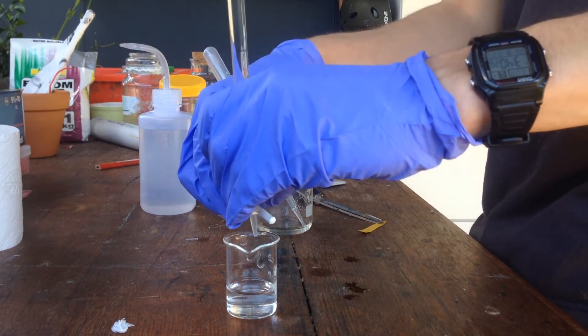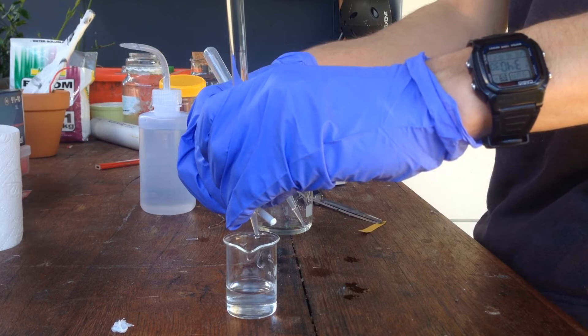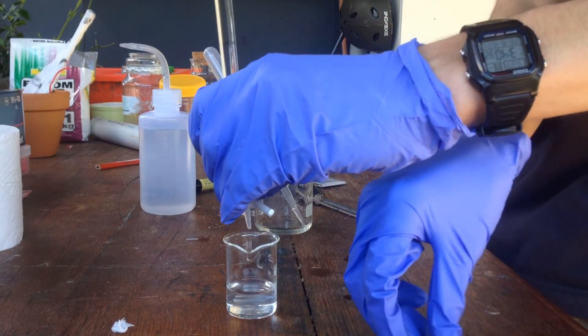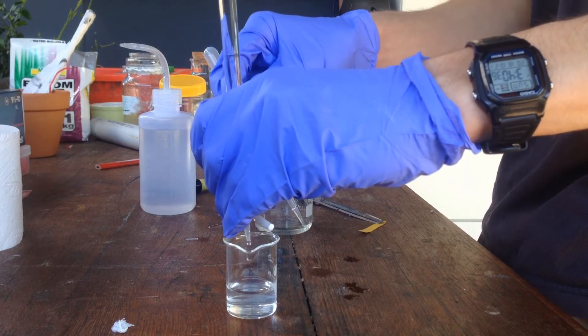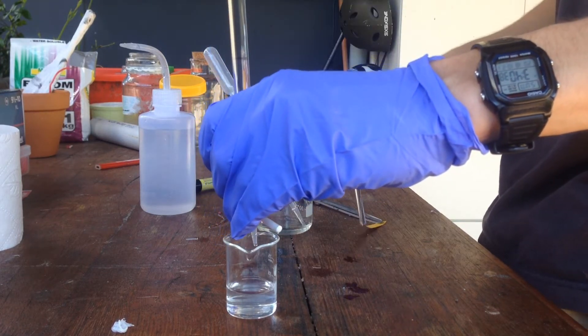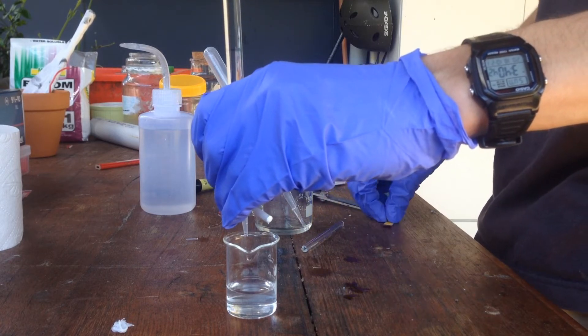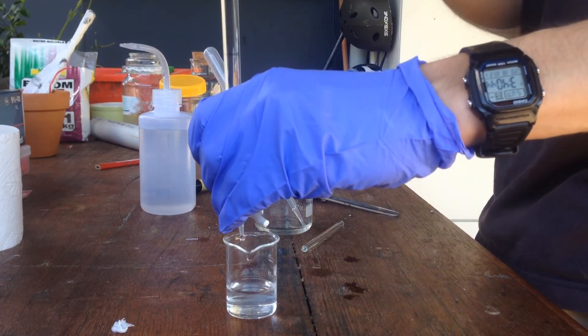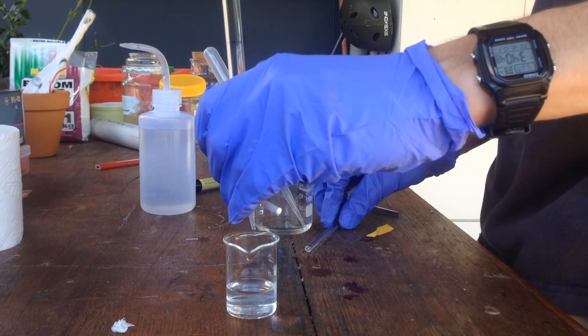And we'll start dropping this in a bit at a time and stoppering it. And then we'll grab our glass stir rod and test it with some pH paper over here. So it's still strongly basic. I'll show you the pH paper now. Just there.